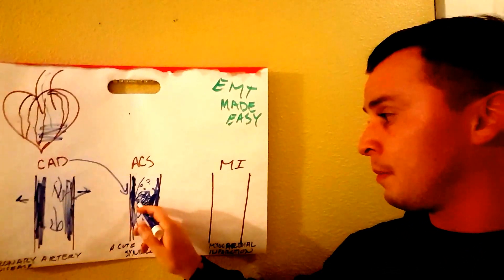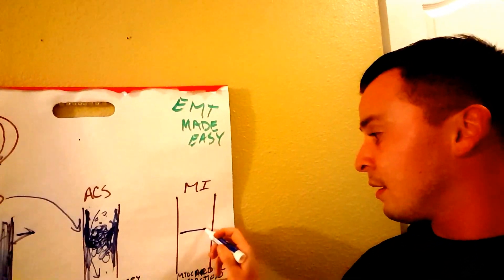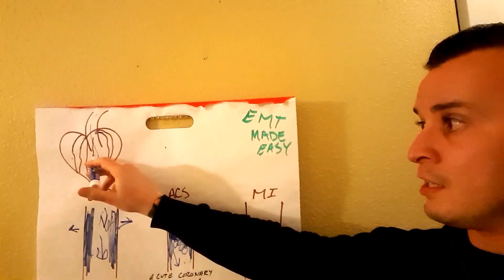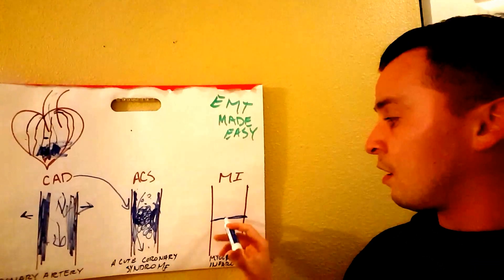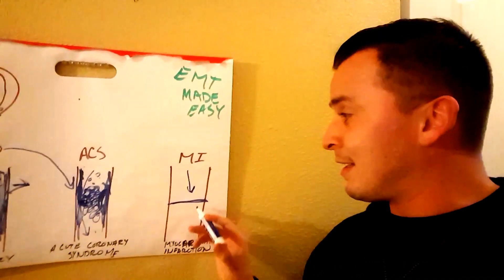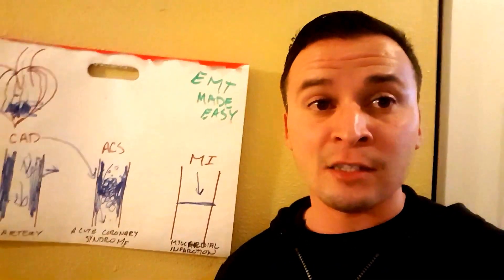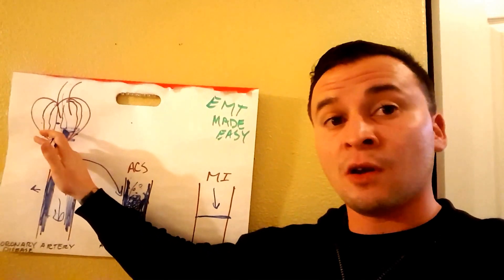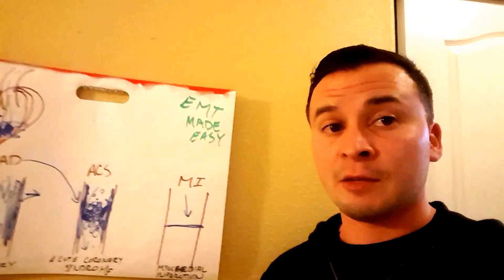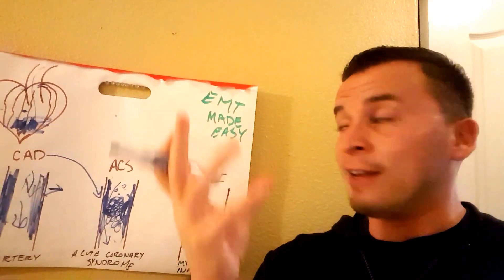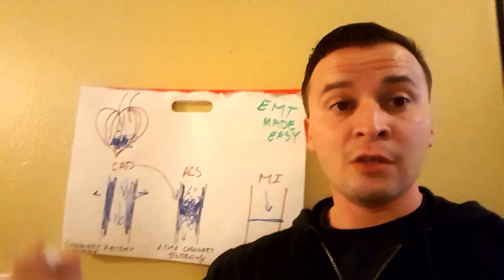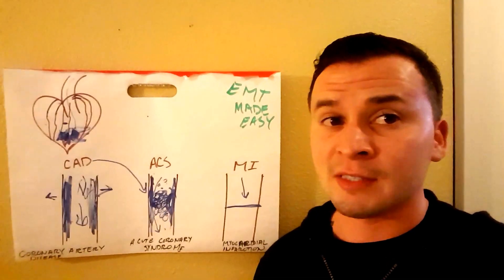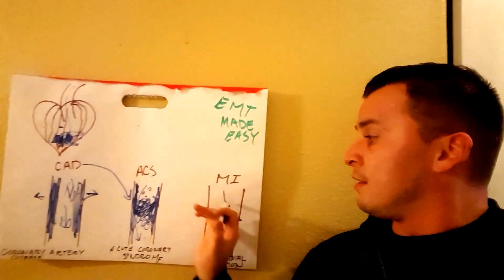If the blockage continues to build, it will completely cut off circulation to a section of the heart. With no blood — and therefore no oxygen — reaching that area, the tissue dies. First cells die, then tissue dies, then the organ is compromised. This is why MI is dangerous: the heart can't pump effectively, and if it continues, dysrhythmias can occur and the heart may stop entirely.